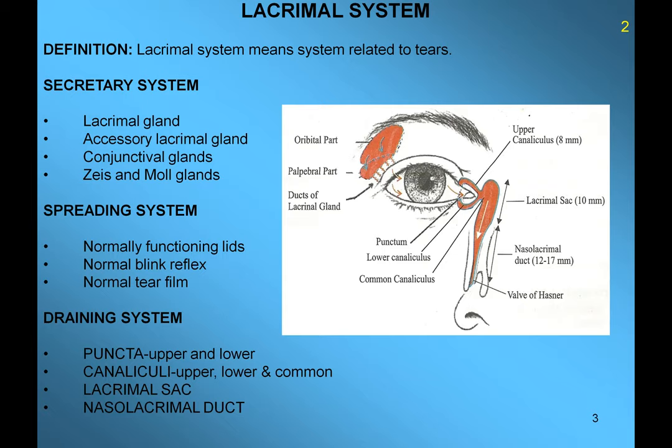The lacrimal system consists of three portions: a secretive portion, a spreading portion, and an NLD system. The lacrimal fluid or tears are created by the lacrimal glands itself, the main lacrimal glands, accessory lacrimal glands, conjunctival glands that is goblet cells, glands of Zeiss and Moll, and tarsal and meibomian glands present in the eyelids. The spreading system consists of normal closing and opening of the eyelids and a healthy blink reflex — we blink on average every five to six seconds normally — and a normal and healthy tear film layer.